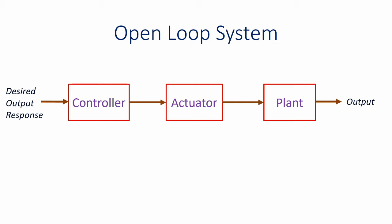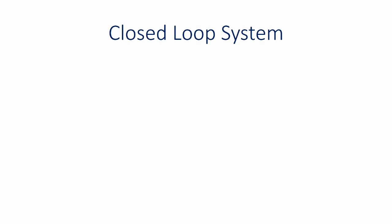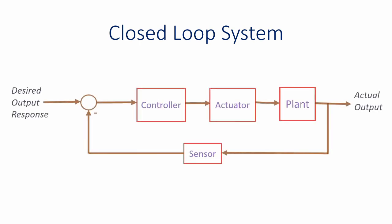The other type of control system is called a closed loop control system. In this case, an additional feedback path is given. The output of the system is continuously measured with the help of a sensor and is compared with the desired output response, and an error signal is produced. The controller controls the plant based on that error signal with the help of the actuator.